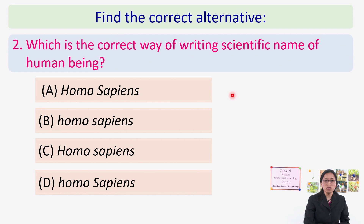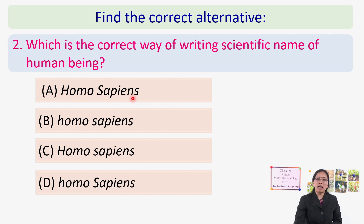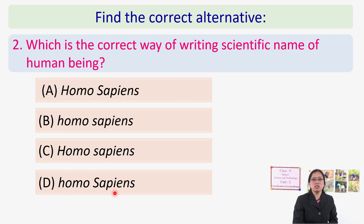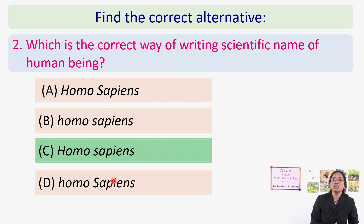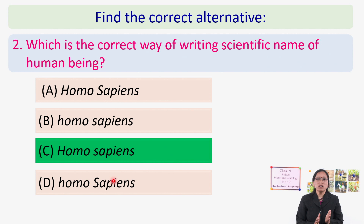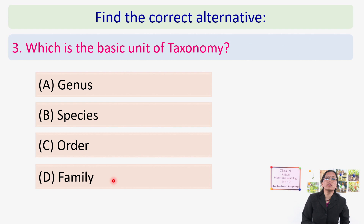Next question: which is the correct way of writing the scientific name of human being? Option A has both genus and species in capitals. Option B has both in small letters. Option C has genus starting with capital and species with small letter. Option D has genus in small and species in capital. The correct answer is option C — Homo sapiens — genus starts with capital, species with small letter. Last question: what is the basic unit of taxonomy? The answer is species.